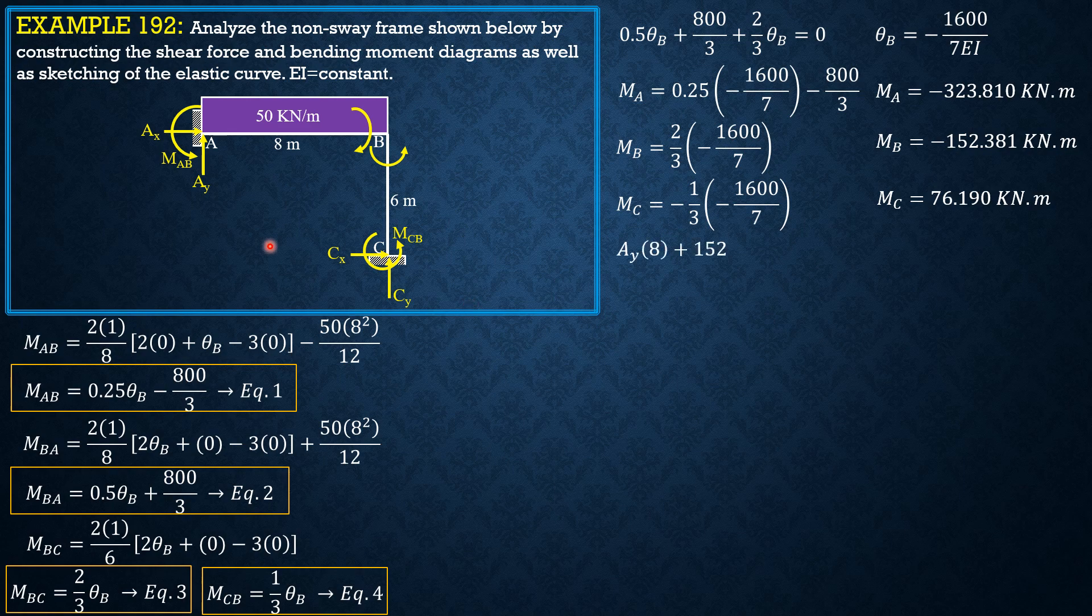First considering AB, summation of moments equals zero. Ay times 8 plus MBA, which is 152.81, equals moment at A, which is 323.81, then plus the moment of the load, 50 times 8 times 4.